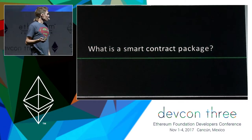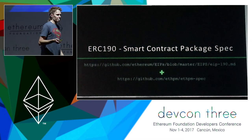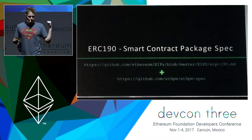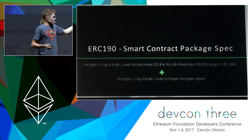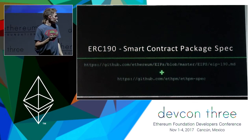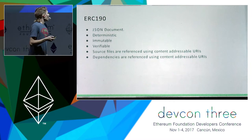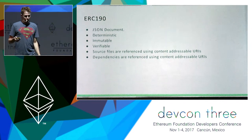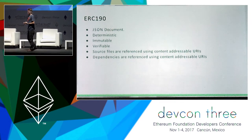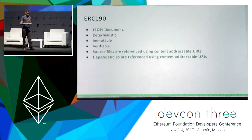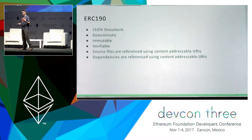So let's take a look at what a smart contract package actually is. At the beginning of this year, myself and a number of other framework developers came together and hashed out what is referred to as ERC-190. This is a spec for how smart contracts can be packaged. What ERC-190 specifies is a format for a JSON document. It allows you to create a package that lets other people deterministically rebuild the assets from that package, to verify on-chain assets or assets included in the package. The packages themselves are designed to be immutable, which means once you have a reference to a package, that thing can never change out from under you.